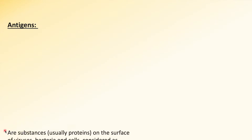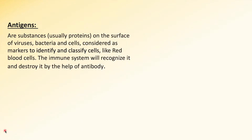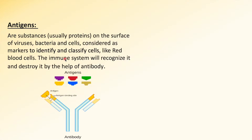Antigens are substances usually made up of proteins. You will find them on the surface of viruses, bacteria, and other cells. They are considered as markers to identify and classify these cells, like red blood cells. The immune system will be induced to build antibodies against them.